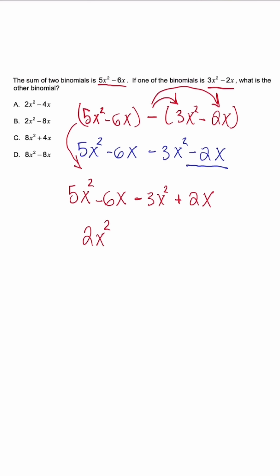So when we simplify, 5x² minus 3x² will give me 2x² and negative 6 plus positive 2 is going to give me negative 4x. So when we look at our answer choices, this is going to be answer choice 1.